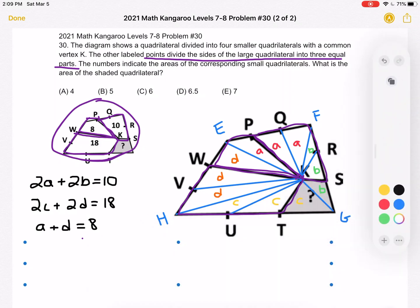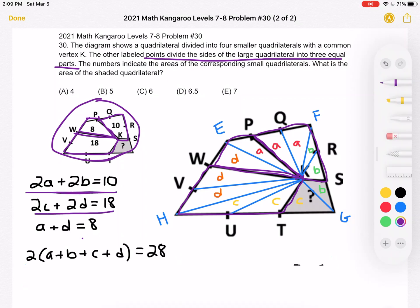Now the next step is to basically combine the first two equations together, this and this. And then we can factor out a 2 to get 2 times the quantity of A plus B plus C plus D is equal to 28, which is 10 plus 18. And now we know that we already know that A plus D is equal to 8.